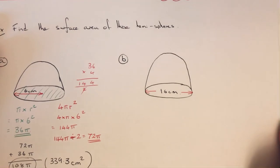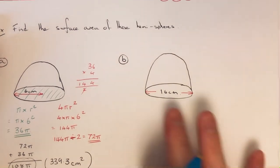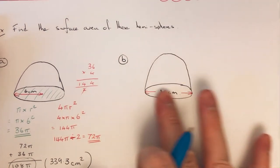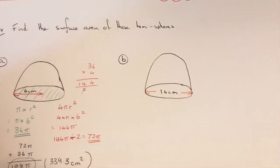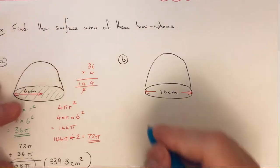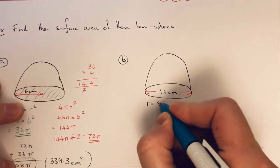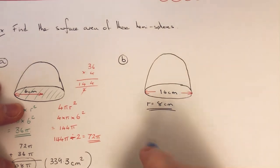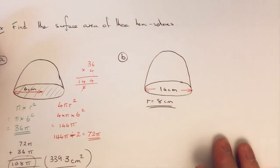So let's have a look at part B. This time we've got a hemisphere, and we're given the diameter this time, which is 16. So I'm just going to half that 16 to give the radius, which is 8 centimeters. So that's the number that I need to put into the formulas.